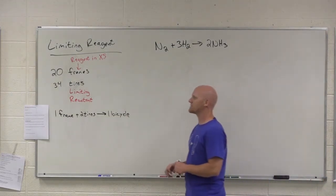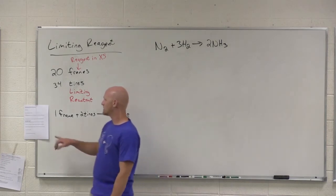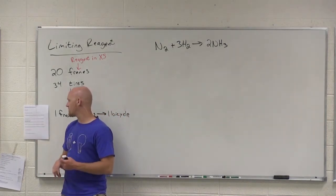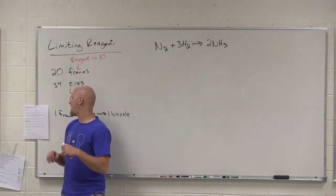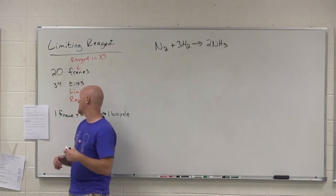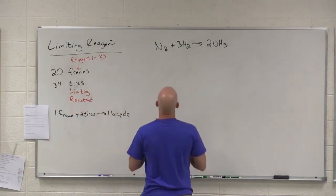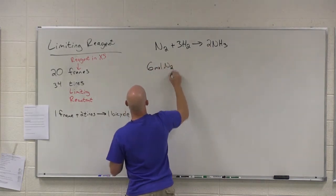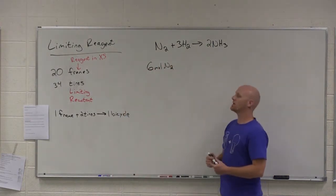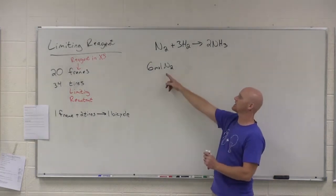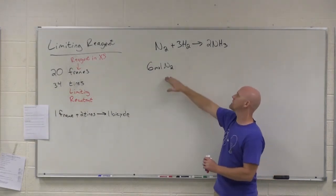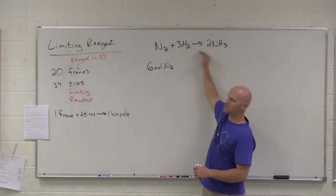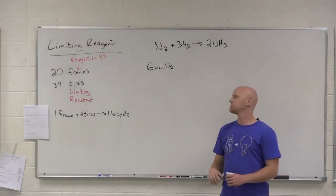That is extra information that has to be provided in the context of a problem. So notice, the first question under limiting reagent calculations on your handout there is how many moles of hydrogen gas are required for six moles of nitrogen gas to react completely. So when I ask you how many moles of nitrogen gas do we start with? It's six moles. It was extra information not contained within a balanced chemical reaction at all.